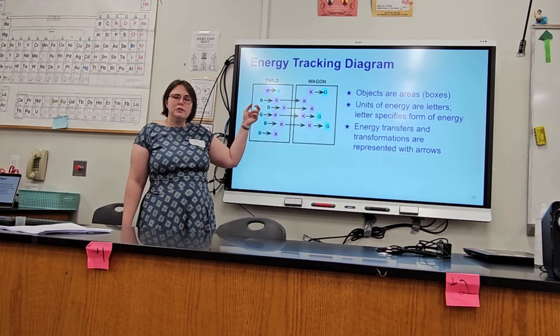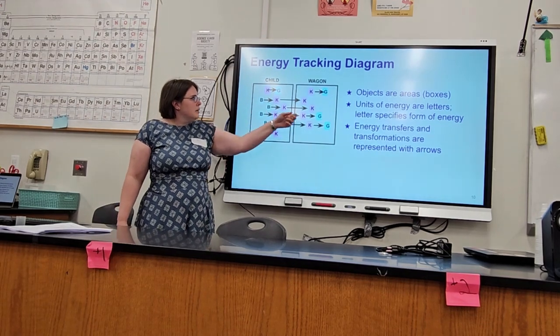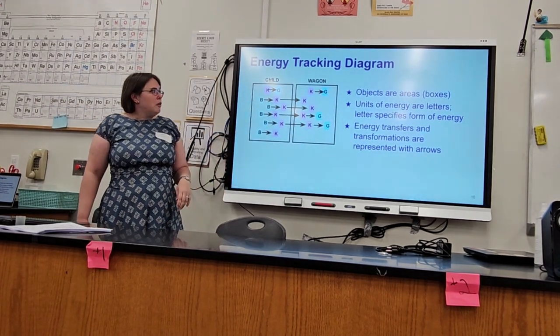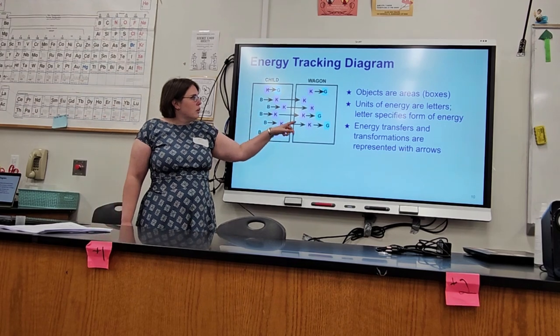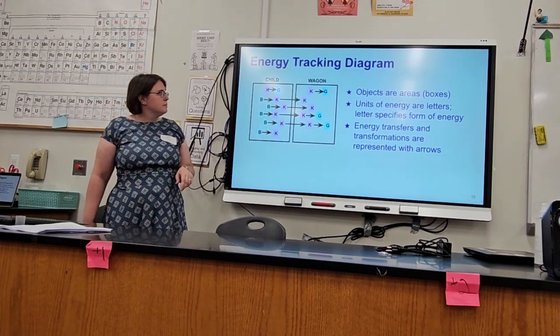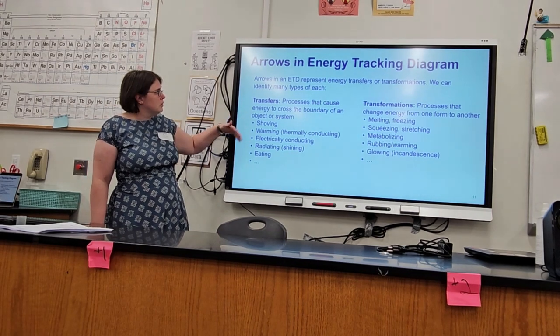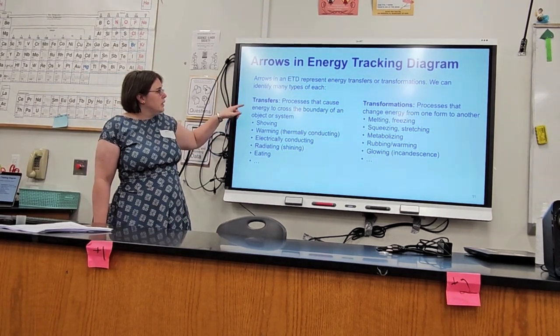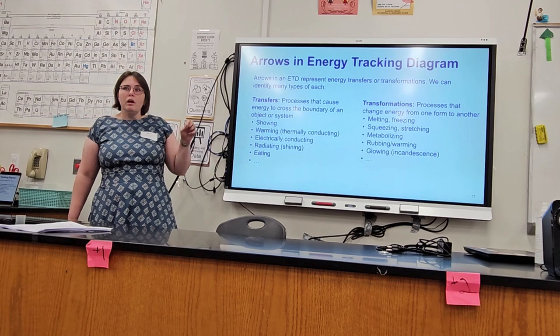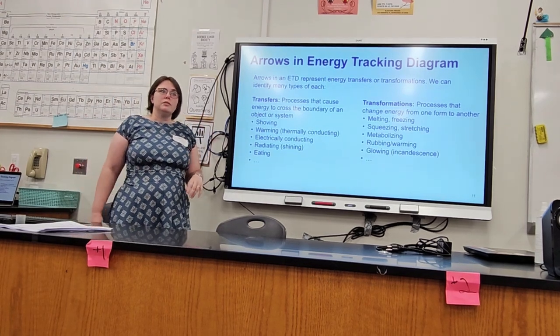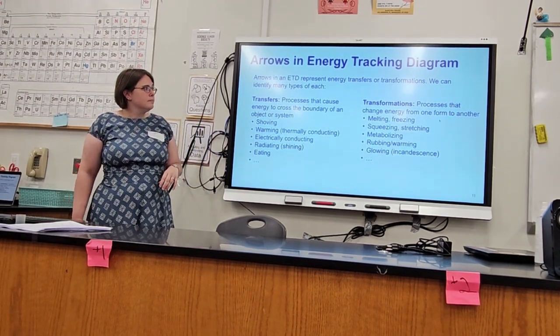And they kind of get that and can tell you that back to you, but they don't necessarily think about it. And making it so that the blocks are there and counting them up emphasizes that conceptual point that the energy is not lost or gained. Okay, so the objects are areas, they're the boxes. And then the units of energy are different types of letters. The biologic metabolism is B, kinetic is K, and gravitation is G. And the energy transformations are represented with arrows.